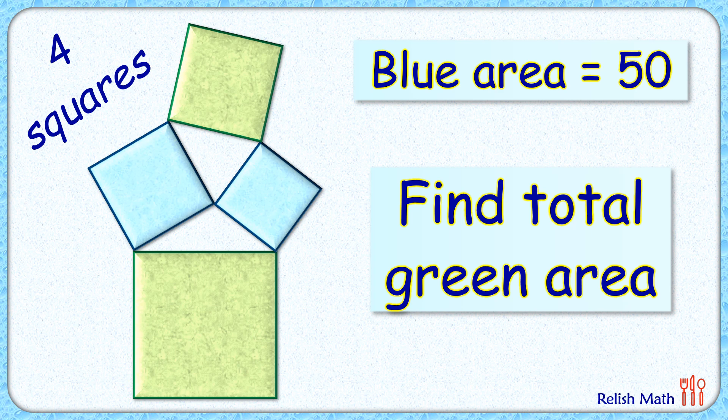This question proves why we all love geometry. Here we're given four squares, all of different dimensions. The sum of the area of these two blue squares is given as 50 centimeter square. The exciting part is, with this limited data, we have to find the sum of area of these two green squares.